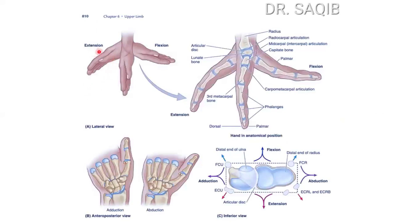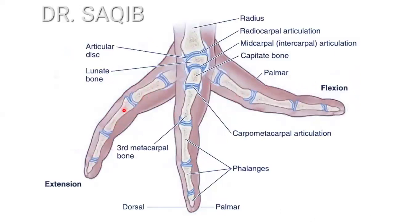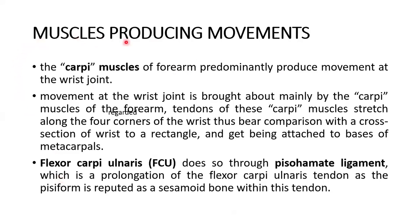Here you can see extension, flexion, adduction, abduction, and inferior views. Adduction mainly occurs at the wrist joint, whereas abduction from the neutral position involves the midcarpal joint. Circumduction of the hand comprises the conjunctive sequence of flexion, adduction, extension, and abduction.